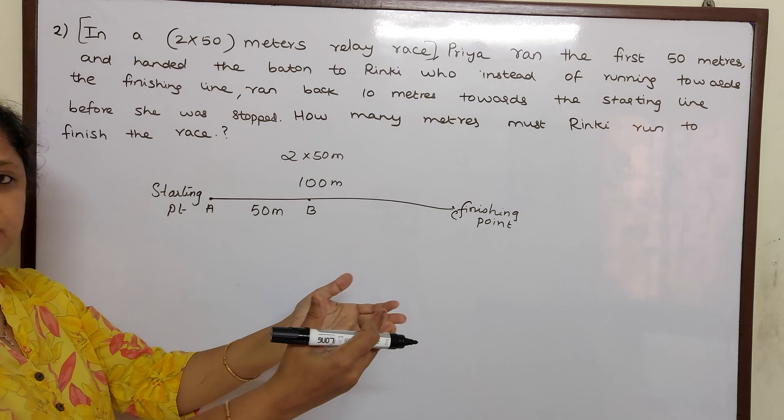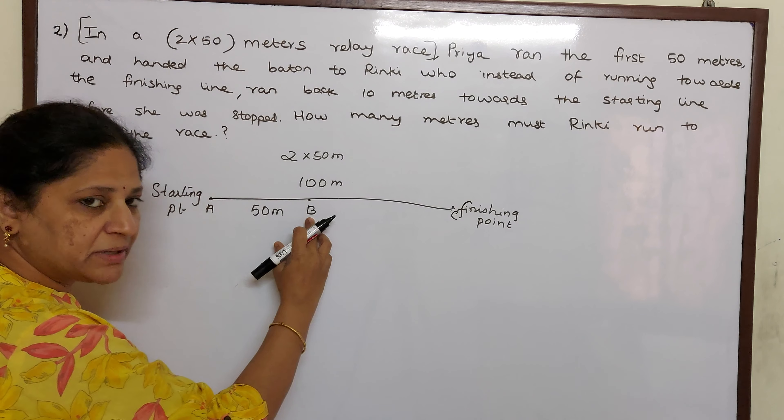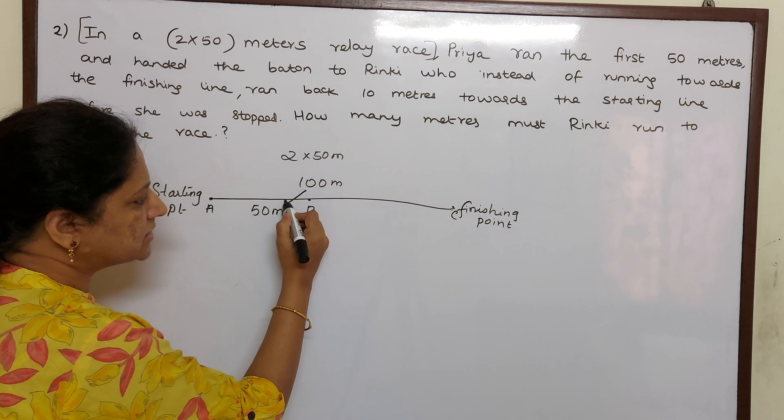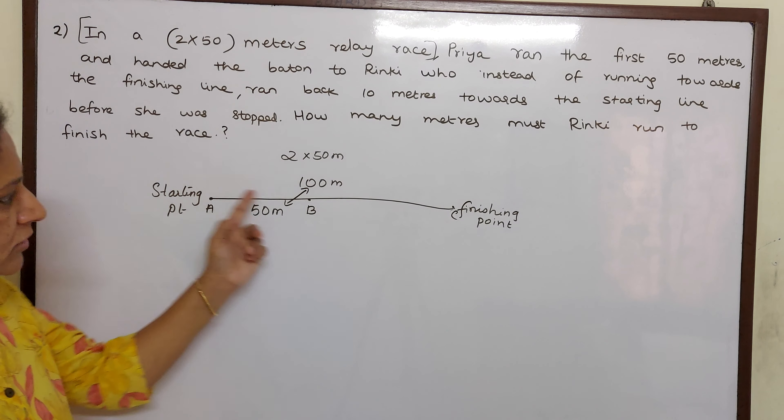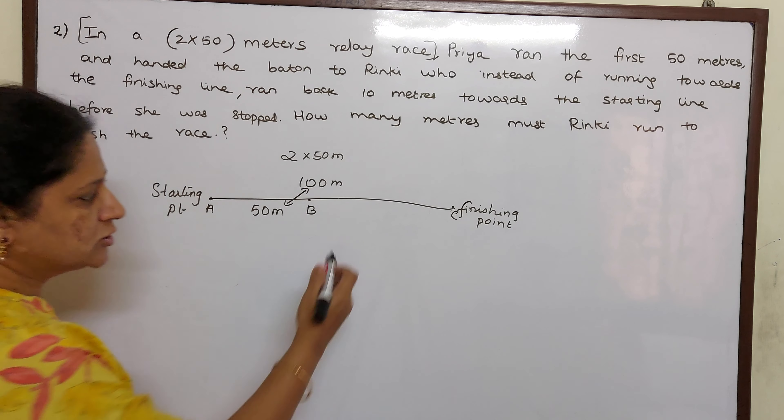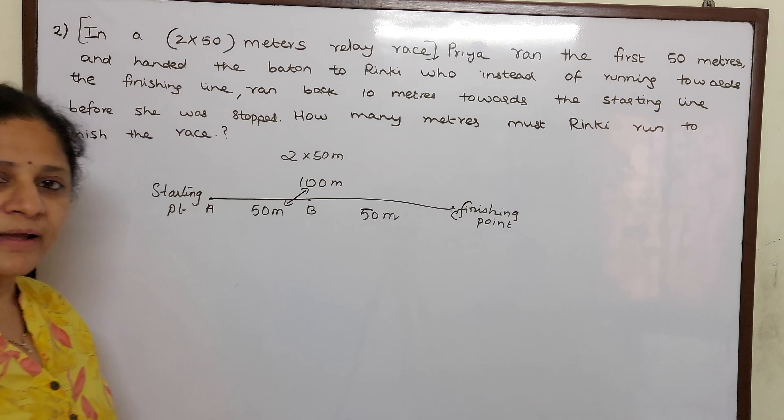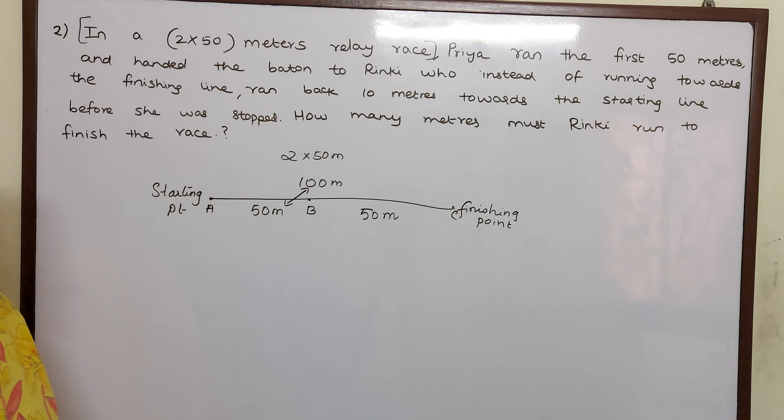Now Rinky has to start running from here to here. So Rinky has to run from B to C. So how much meter she has to cover children? Out of the 100 meter, Priya has already covered 50. She has ran. So the remaining 50 meter has to be covered by Rinky. But what she does?